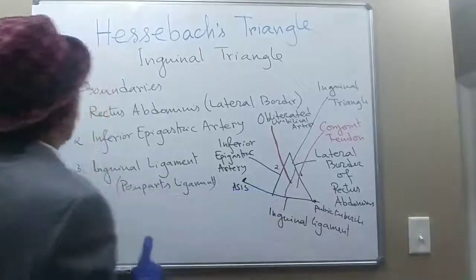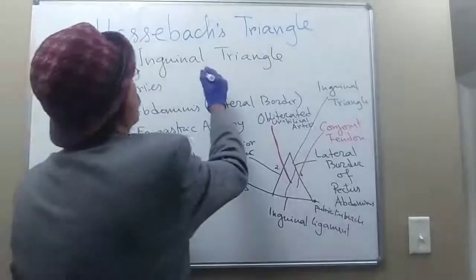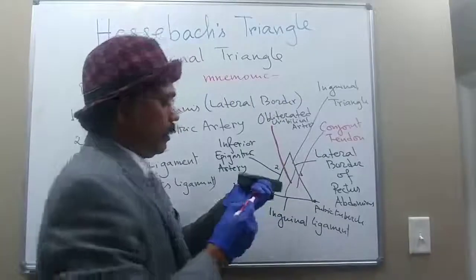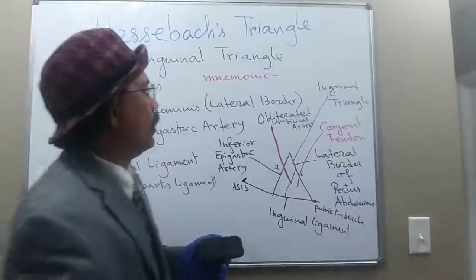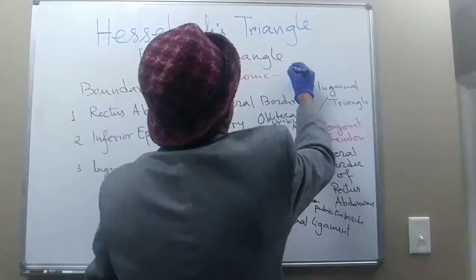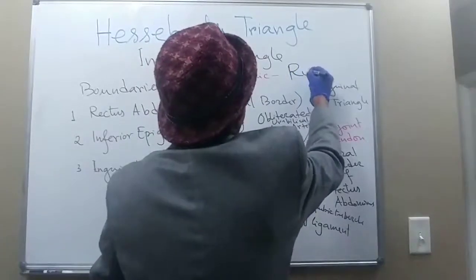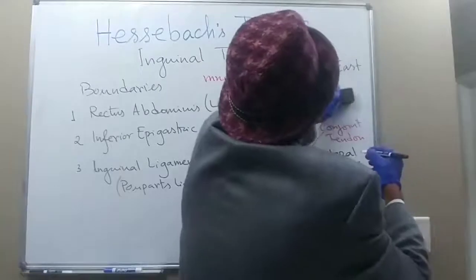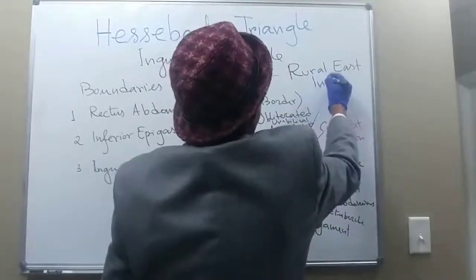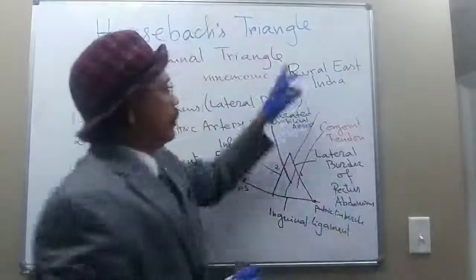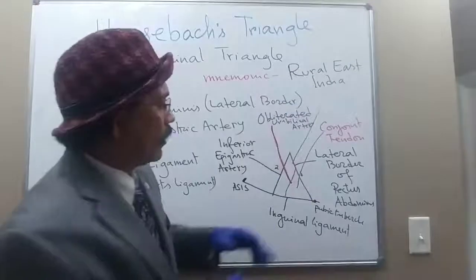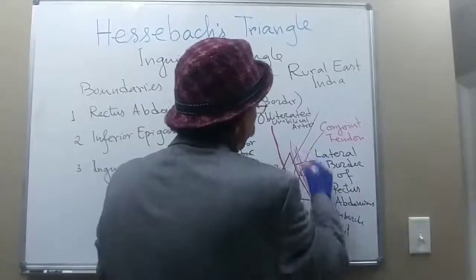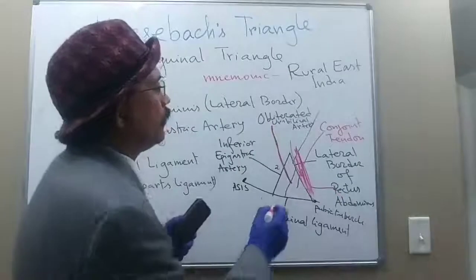To remember the boundaries of Hesselbach's triangle, we use the mnemonic 'Rural East India.' R stands for Rectus abdominis muscle, which forms the medial boundary.